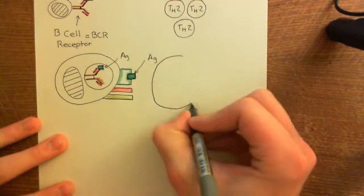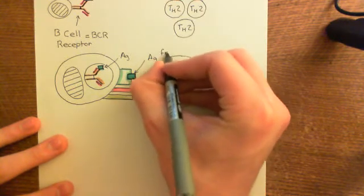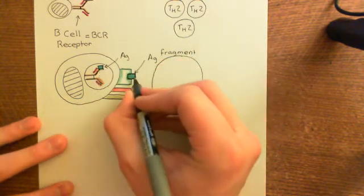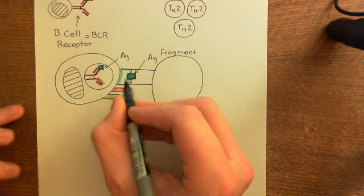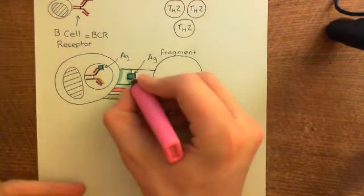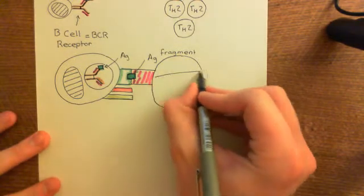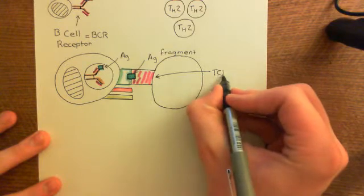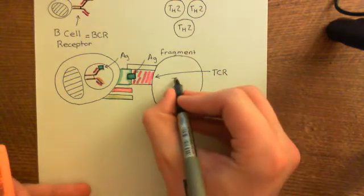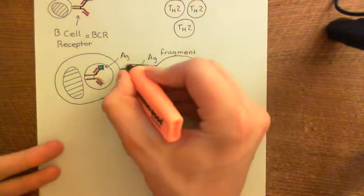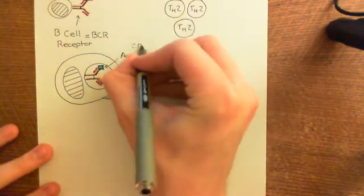The T helper 2 cell has a T-cell receptor complementary perfectly for that antigen fragment. There's another molecule that needs to bind to the MHC class 2, which is the CD4 that's still on the surface of these T helper 2 cells. So CD4 — cluster of differentiation or cluster of designation 4 — also binds here.